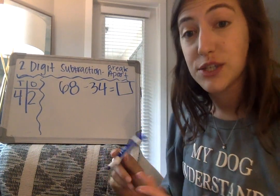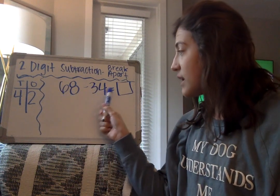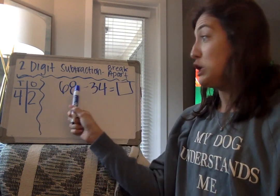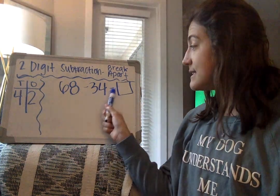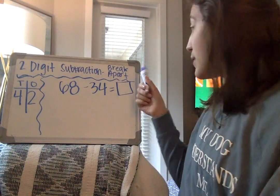So my subtraction equation becomes 68 minus 34 equals box, or 68 taking away 34 is the same as what number? So let's go ahead and solve that together using the break-apart strategy.